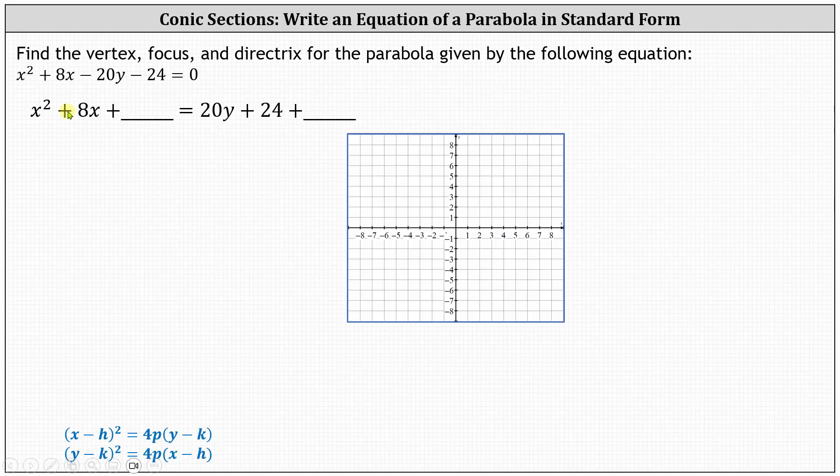And now we complete the square on the left side to make the left side a perfect square trinomial. Recall to do this, we add the square of half of b, or half of the coefficient of x, which is eight, to both sides of the equation. This indicates we add the square of four, or 16, to both sides of the equation.